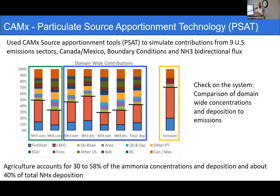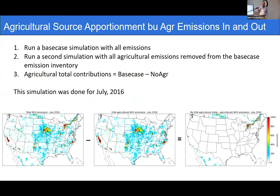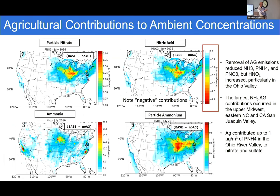Not all is lost. Prior to this, to get a feel for agricultural contributions, we did a standard in-and-out run: a base case simulation, and a no-agriculture run with agricultural emissions removed from the inventory. Base case minus no-Ag gives the total agricultural contribution — a really valuable value. Unfortunately, we only had this for diagnostic purposes for July 2016, but there are some interesting results nonetheless.